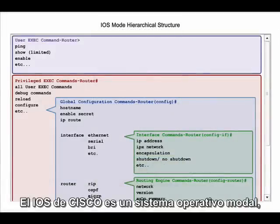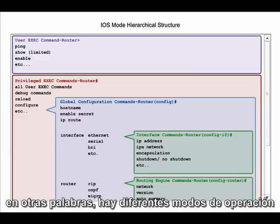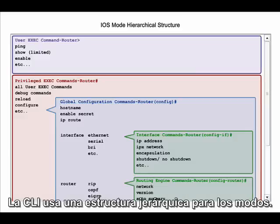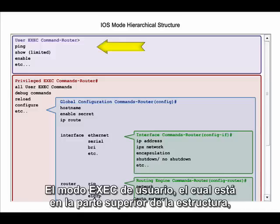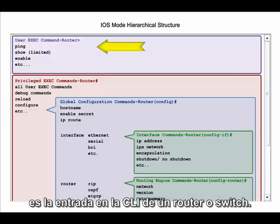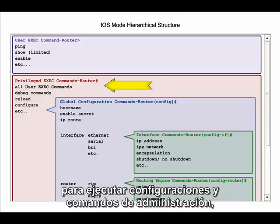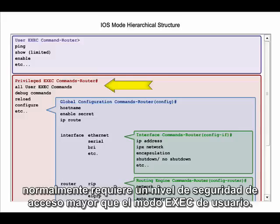The Cisco IOS is a modal operating system. In other words, there are different modes of operation, each having its own domain of operation. The CLI uses a hierarchical structure for the modes. The user executive mode, which is at the top of the structure, is the entrance into the CLI of a router or a switch. The privileged executive mode is the mode a network administrator uses to execute configuration and management commands, and typically requires a higher level of access security than the user exec mode.